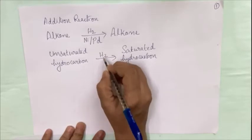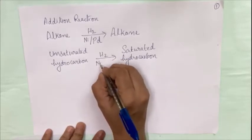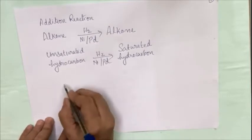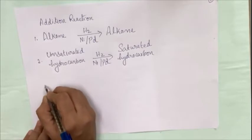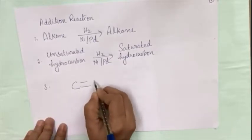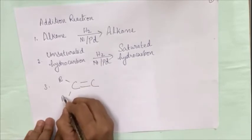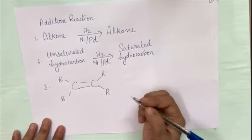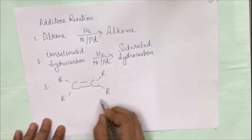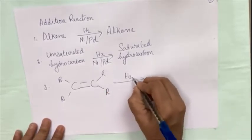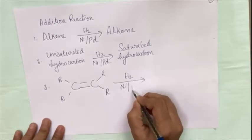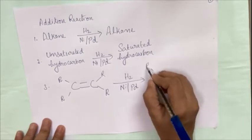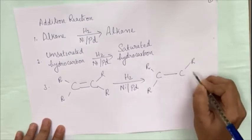In the presence of a catalyst like nickel or palladium. In general, there is one more way to represent the reaction. Carbon with a double bond, and to write the other valencies of carbon, we use a group called R, which is also called an alkyl group, or it could be hydrogen. In an unsaturated hydrocarbon, hydrogen gets added across the double bond in the presence of a catalyst like nickel or palladium, and the product you get is a saturated hydrocarbon.